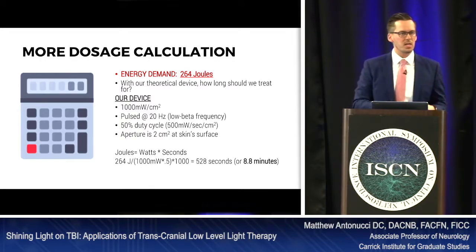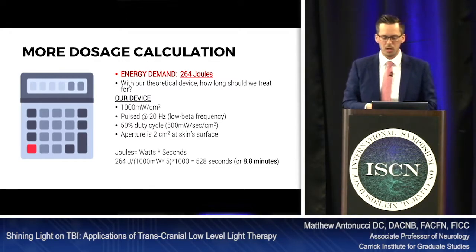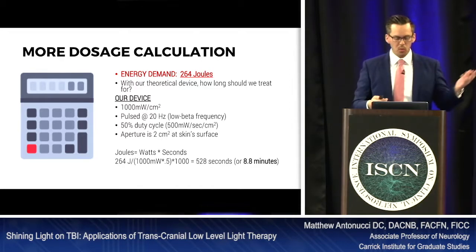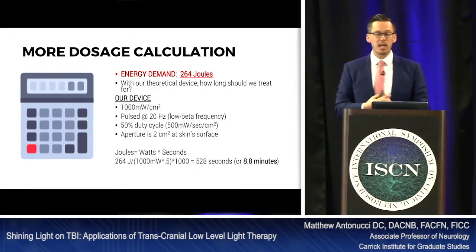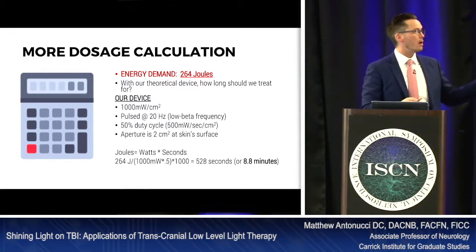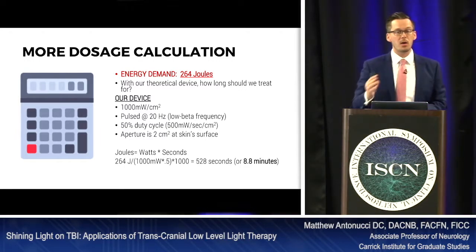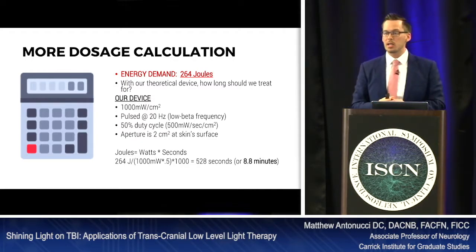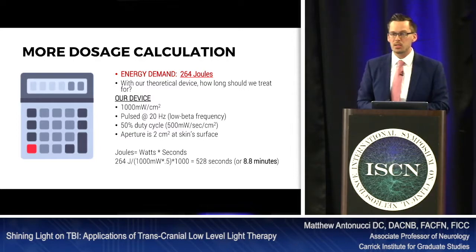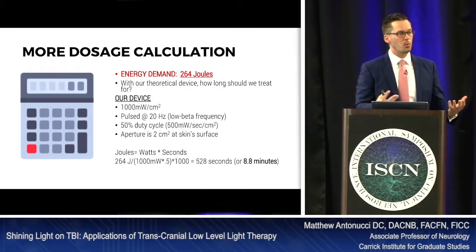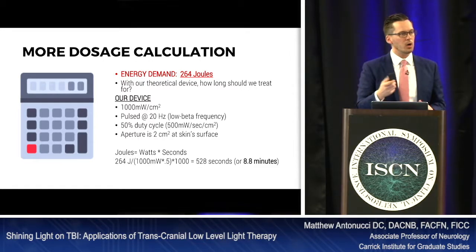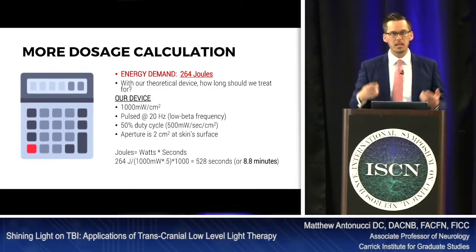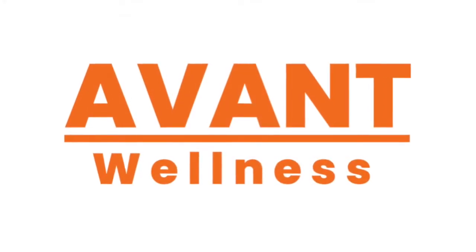That also depends on spectral bandwidth and lens focus — factors to ask the device manufacturer about. To calculate treatment time: joules equals watts times seconds. For 264 joules at an effective dose of 500 milliwatts (0.5 watts), you need 528 seconds — about 8.8 minutes. That's the stimulation time needed to deliver the appropriate dose to reach your target tissue. The key is working backwards from the target tissue, not just selecting a preset brain setting on your device.